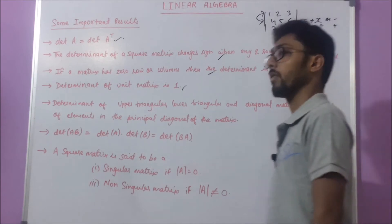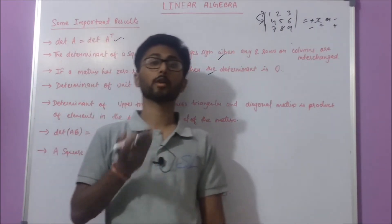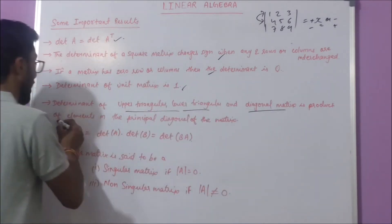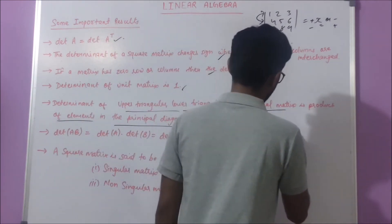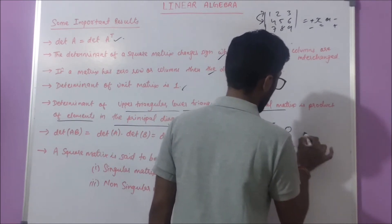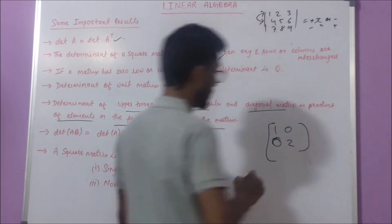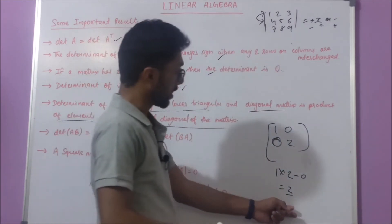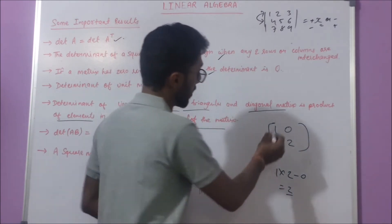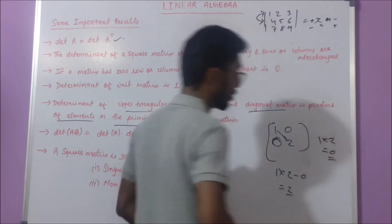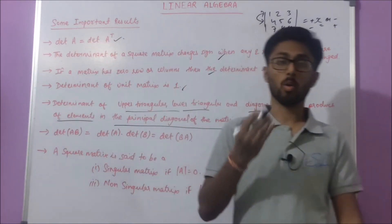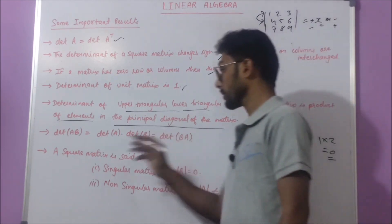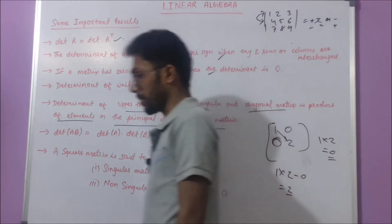The determinant of an upper triangular, lower triangular, or diagonal matrix is the product of the elements in the principal diagonal. For example, if a diagonal matrix is given as [[1, 2], [0, 0]] — wait, for a 2×2 diagonal matrix [[1, 0], [0, 2]], the determinant is 1×2 minus 0 = 2. You can find it directly by multiplying the diagonal elements: 1×2 = 2. This is a short trick for triangular and diagonal matrices.